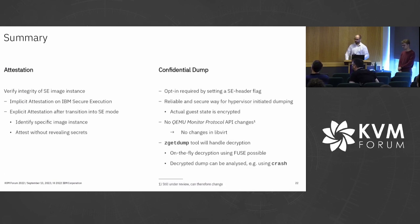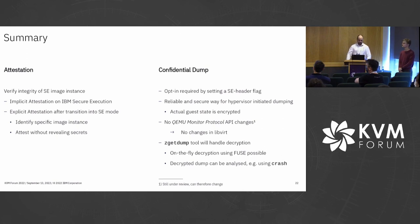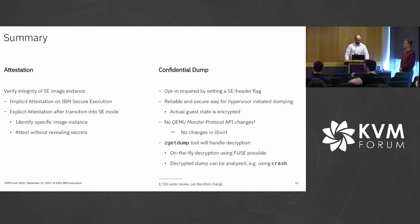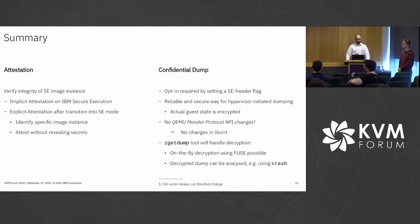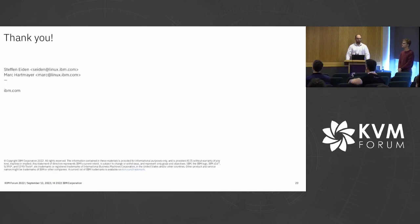Let's summarize. Attestation: you can use it to verify the secure execution image instance. Implicit attestation is useful and available on S390. Now we also have explicit attestation after transition into secure execution mode. It can be used to identify a specific image instance, and you can attest without revealing any secrets. For confidential dump: first you have to do an opt-in — that's important. It's a reliable and secure way for hypervisor-initiated dumping because the actual guest state is encrypted. There are no QEMU monitor protocol API changes right now, so no changes in libvirt. zgetdump handles the encryption with on-the-fly decryption possible, and the dump can be analyzed using 'crash'. Thank you for your attention.